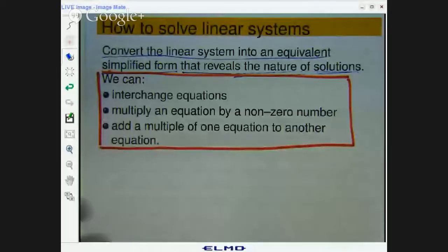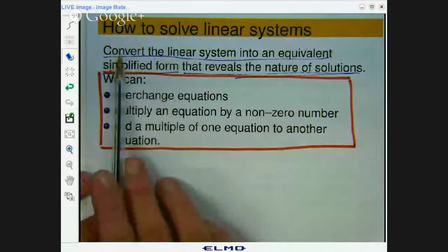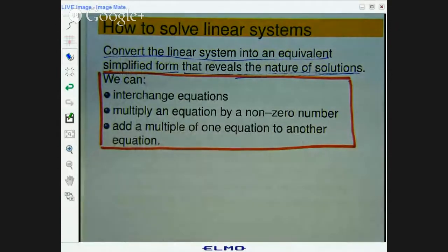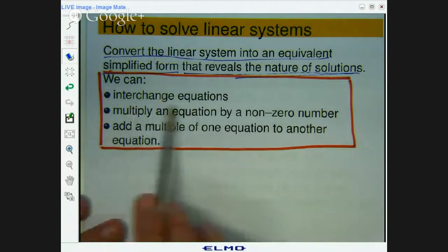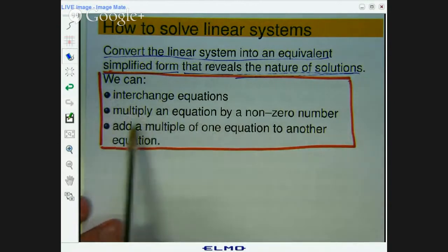Now we know from a procedural point of view from the previous video, we can solve linear systems by converting the system of equations into some sort of equivalent simplified form that reveals the true nature of solutions. And we can interchange equations, we can multiply an equation by a non-zero number, and we can add a multiple of one equation to another equation or subtract.